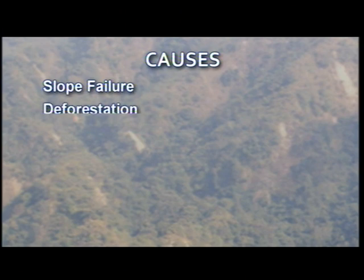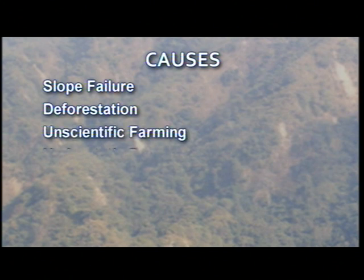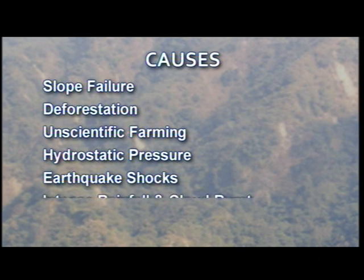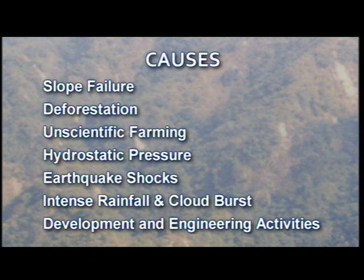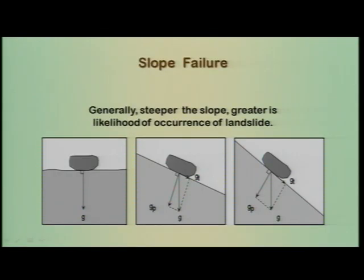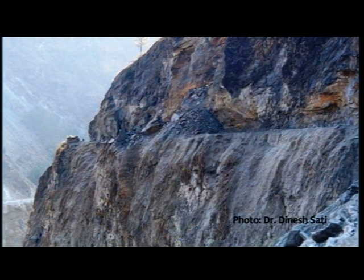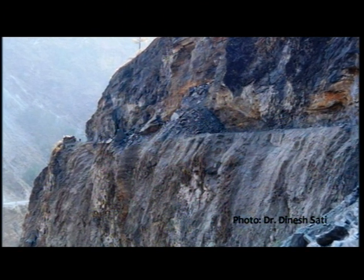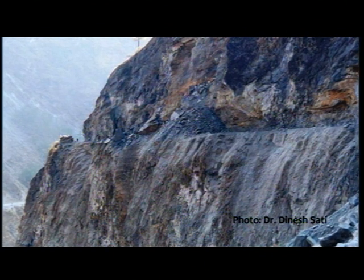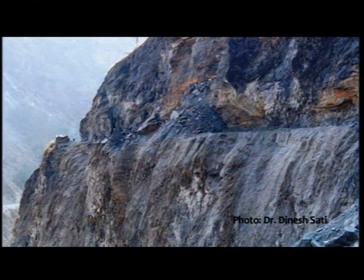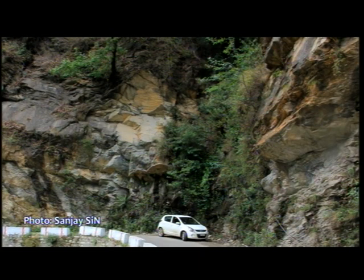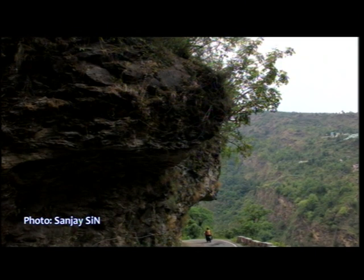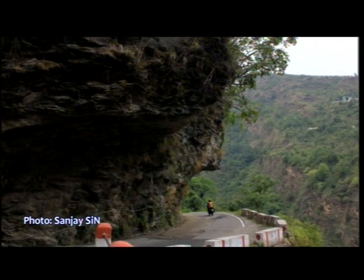Now let us know the causes of landslides. Broadly, they are: slope failure, deforestation, unscientific farming, hydrostatic pressure, earthquake shocks, intense rainfall and cloudburst, and development and engineering activities. In the case of slope failure, generally the steeper the slope, the greater the likelihood of a landslide. Landslide is a gravitational phenomenon, hence slope angle has a direct relation with slope stability. As the slope angle increases, gravitational force increases, thereby reducing stability. Slopes become critical when rock masses overhang along the downslope.